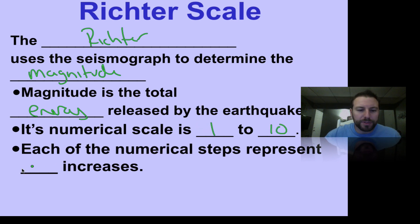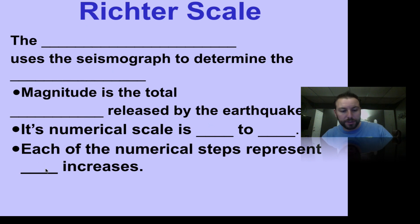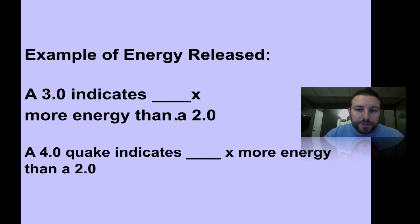And this one goes from one to ten. Each of the numerical steps represents a tenfold or ten times increase. And to see how the Richter scale works, we can go like this.